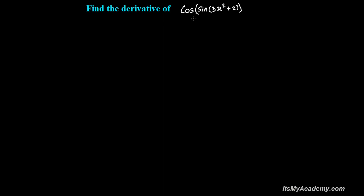We have an interesting question here: find the derivative of cos of sine 3x squared plus 2. Sine is a trig ratio whose angle is 3x squared plus 2, and since we have nested trig functions, we need to differentiate three times here.